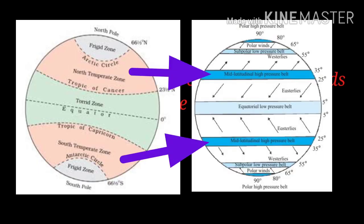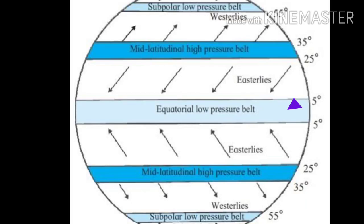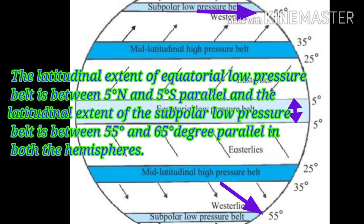With which pressure belts are the winds in the temperate zone associated? The winds in the temperate zone are associated with the mid-latitudinal high pressure belt. Write the latitudinal extent of the low pressure belts. The equatorial low pressure belt lies between 5° North and 5° South parallel, and the subpolar low pressure belt lies between 55° and 65° parallel in both hemispheres.